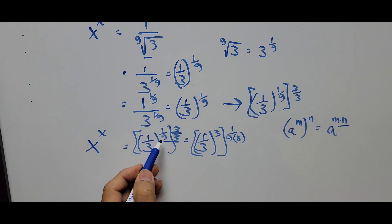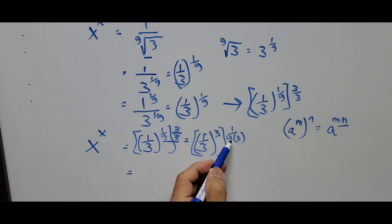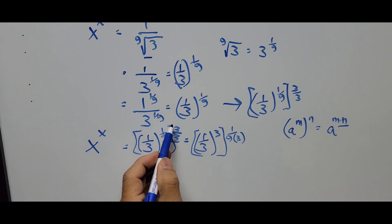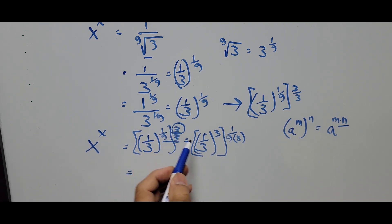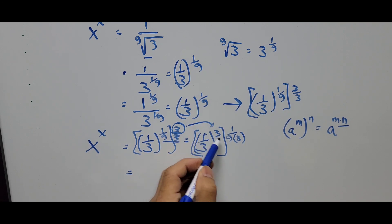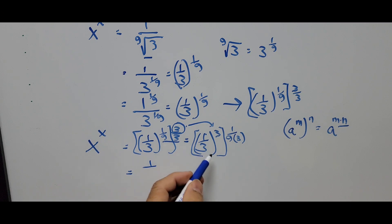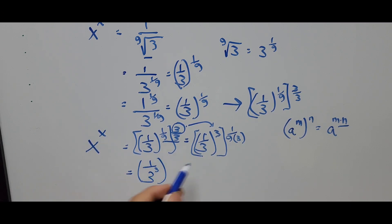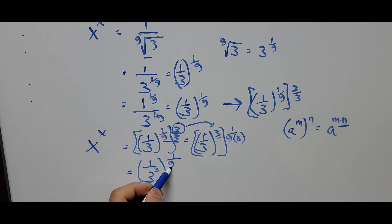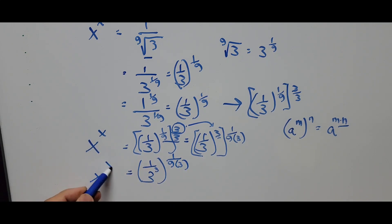Since 9 and 3 are in the denominator, we multiply them together. This turns out to be 1 over 3 raised to the third power, then raised to 1 over (9 times 3). So x to the power of x equals (1 over 3^3) raised to 1 over (9 times 3).